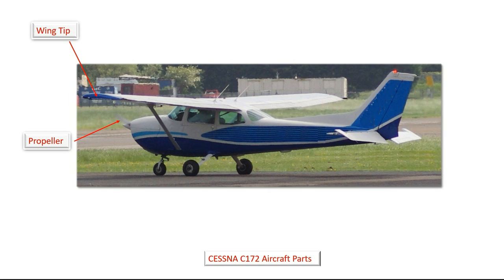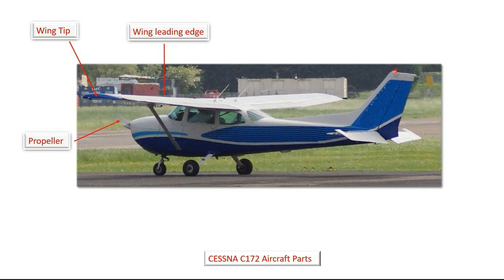The next part we're going to look at is the wing tip. You've got the wing tip on the end of each wing, which will normally have the navigation light attached to it. Next we're going to look at the wing leading edge, which is the front edge of the wing — it's the first part of the wing which makes contact with the oncoming air as we're moving forward.